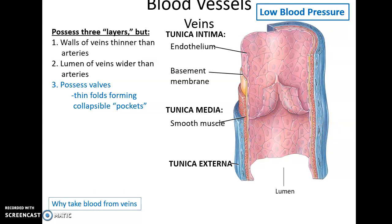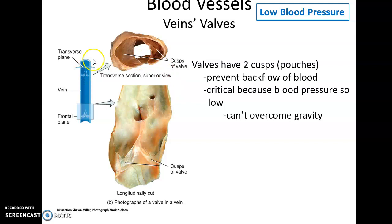Because of low blood pressure, veins have two-pocket valves all along their length, basically only allowing blood to flow back toward the heart. Blood flowing in the correct direction toward the heart causes these pouches to lie flat against the wall of the vein, and blood moves along. However, any time blood tries to backflow in the wrong direction, it will fill these pouches up and they will close, preventing backflow. This low blood pressure is also why blood draws are taken from veins — it's easy for veins to heal after being punctured. If blood were accidentally taken from an artery, blood would squirt out due to high pressure.